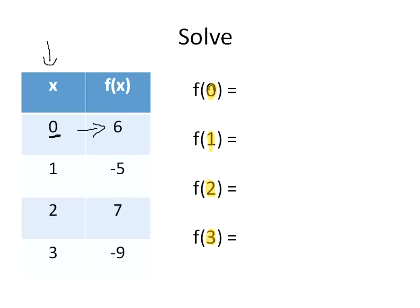When x is equal to 0, y is equal to 6. When x is equal to 1, y is equal to negative 5. When x is equal to 2, y is equal to positive 7. And when x is equal to 3, y is equal to negative 9. And that's it. That's how this function works.